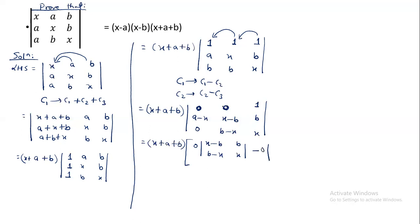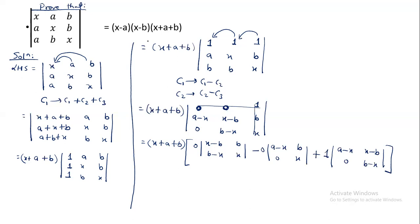So we have: zero, x minus b, zero, x, plus 1. Then a minus x, x minus b, zero, and b minus x. We calculate: x plus a plus b multiplied by zero minus zero, then x multiplied by zero, plus 1 into a minus x times b minus x, and minus x minus b times zero, which equals zero. So we get a minus x times b minus x, giving our required result on the right-hand side.